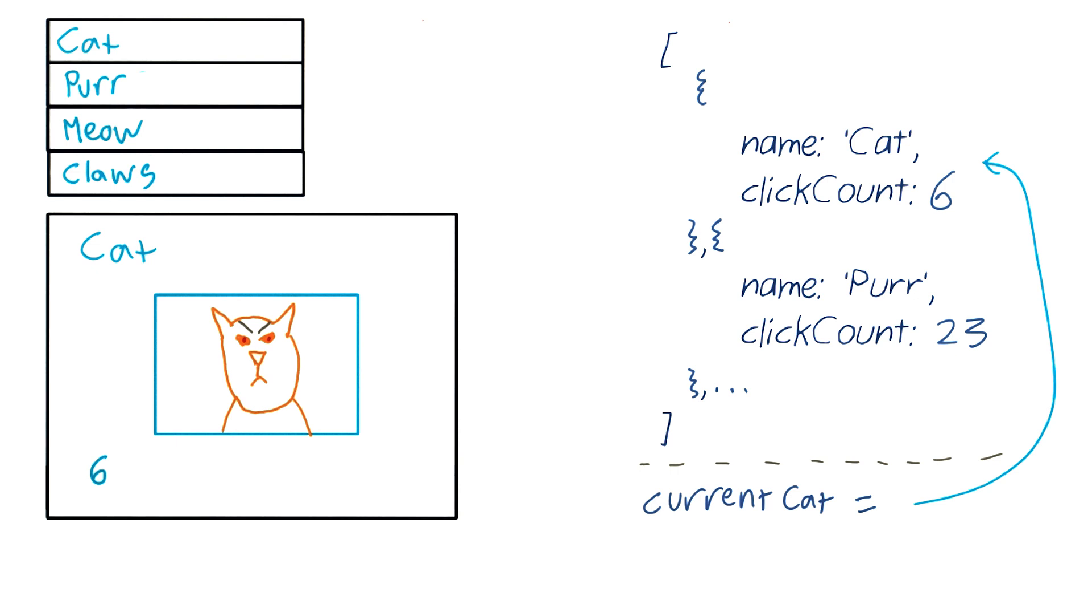Now let's talk about the case where the user clicks on a cat. Well, the octopus is keeping track of where you click. So if you click on this cat here, the octopus will run a method which increases this counter, first in the model, and then in the view.